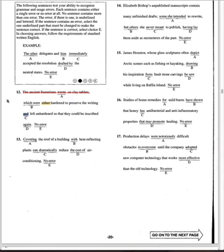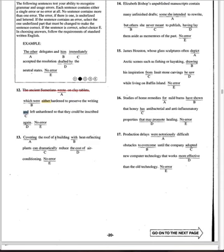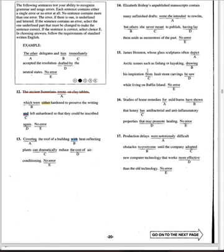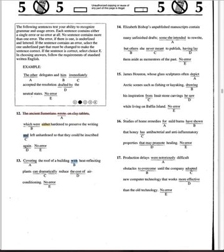Answer choice C again. Here is the question: 'Covering the roof of a building with heat-reflecting plants can dramatically reduce the cost of air conditioning.' If you cover the building with heat-reflecting plants, it doesn't quite make sense — you cover the roof with the plants. I'm going to mark that with blue.